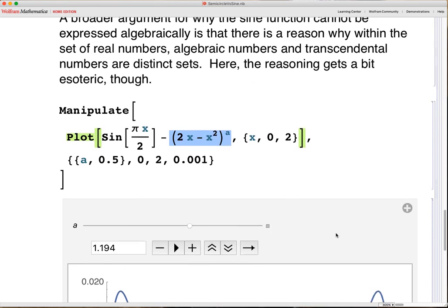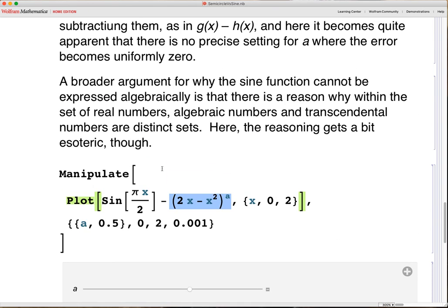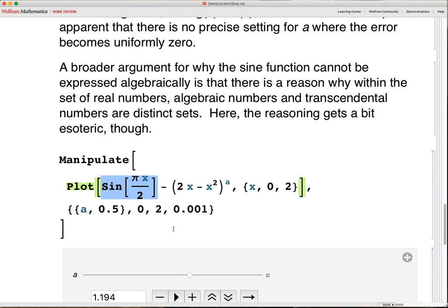If there were an exact solution, then the two sets, which are distinct, algebraic numbers, which would be generated by algebraic functions such as this, and transcendental numbers, which would be generated by functions like this, those two sets wouldn't be distinct. And they are distinct. So therefore, that alone says that it should be possible to do this.